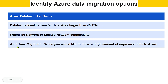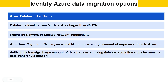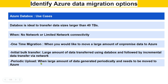There are three different scenarios. First: one-time migration — when you want to move a large amount of on-premise data to Azure. Second: initial bulk transfer — a large amount of data transferred using Data Box initially, followed by incremental data transfer over a network. Third: periodic upload — when large amounts of data are generated periodically, for example every three months, and you want to keep it in Azure for disaster recovery purposes.